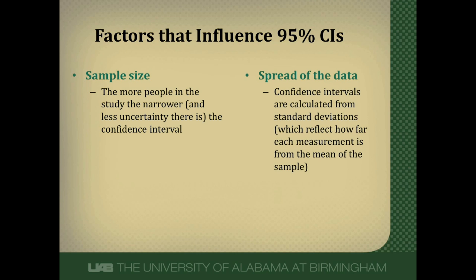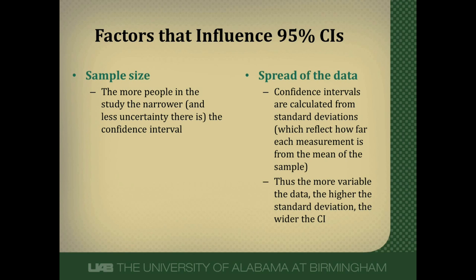Confidence intervals are calculated from standard deviations, which reflect how spread out our data is. A standard deviation measures how far each individual measurement is from the mean of that sample. The more spread out your data, the higher the standard deviation and, no matter what, the wider the confidence interval. Practically speaking, the only thing I can control as a researcher is sample size. The more people I put in my study, the more sure my answer will be and the narrower the confidence interval. I can't really control the spread of the data — the measurements I get are the measurements I get.